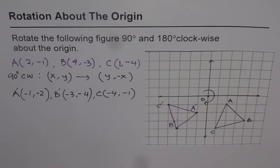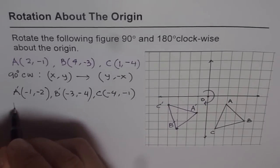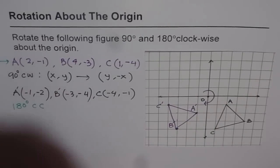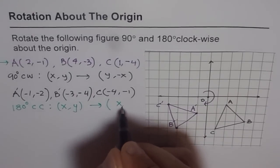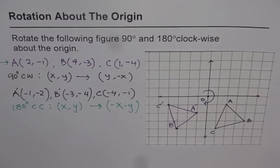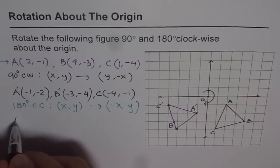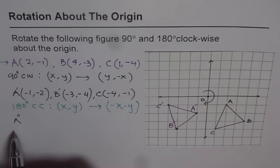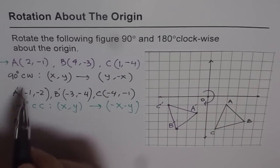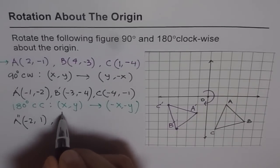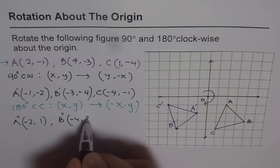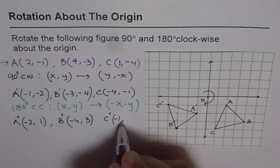Now let's do 180 degrees clockwise. When you do 180 degrees clockwise rotation, the transformation is: if the original point is at (X, Y), their signs will change — X becomes minus X, Y becomes minus Y. So A double dash, the image after 180 degrees clockwise rotation, starts from (2, -1) and we just change the signs to get (-2, 1). For B double dash, it will be (-4, 3). And for C double dash, just change the sign: (-1, 4).